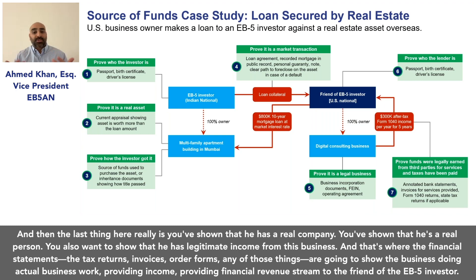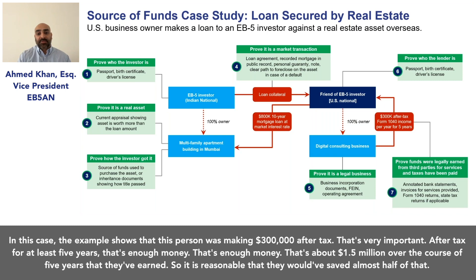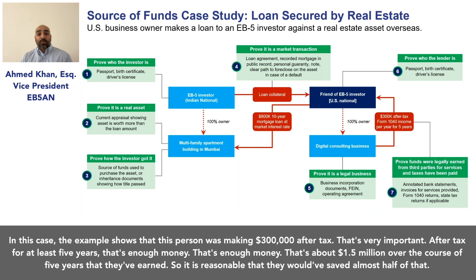You also want to show that the friend has legitimate income from this business. That's where financial statements, tax returns, invoices, order forms, and similar documents come in — showing the business doing actual work and providing a real revenue stream. In this example, the person was making three hundred thousand dollars after tax for at least five years.